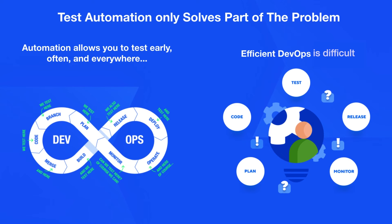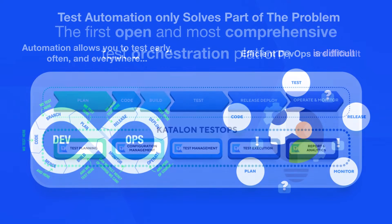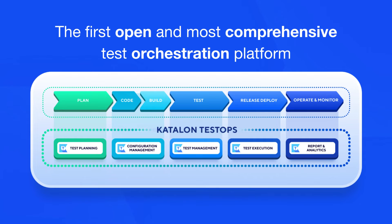Test automation is a familiar concept. It allows us to test early in the process, as often as we want, and anywhere we want in the pipeline. However, without orchestration, efficient DevOps are difficult to achieve. And that is why we have Catalan TestOps — the first open and most comprehensive test orchestration platform that helps you eliminate bottlenecks, streamlines your DevOps and provides you with actionable data-driven insights all in one place.